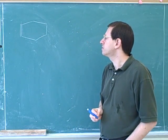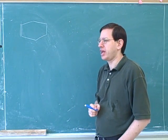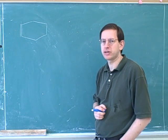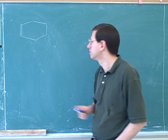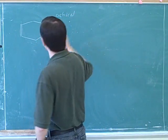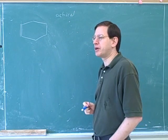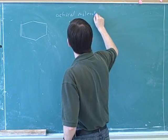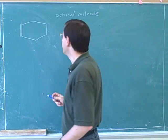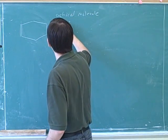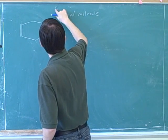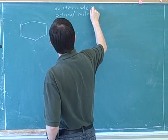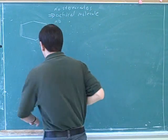Let's start with this molecule. Would you say this is a chiral molecule or an achiral molecule? I want to say achiral because there's no stereocenters. That's a good answer, and that's a really good reason. There are a bunch of different ways to figure out whether something is achiral, but you used the best shortcut — looking for stereocenters. You're right, there's no stereocenters, so it's an achiral molecule.